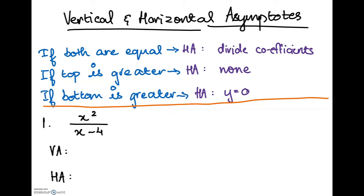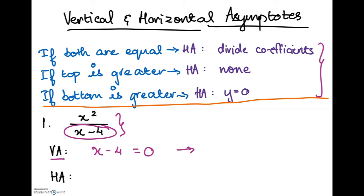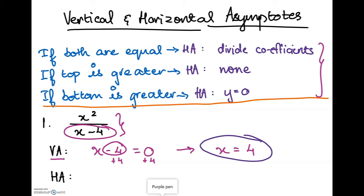Our first example is x squared over x minus 4. To find the vertical asymptote, set the denominator equal to 0: x minus 4 equals 0, then add 4 to both sides to get x equals 4. So x equals positive 4 is your vertical asymptote. For the horizontal asymptote: the highest power of x on top is 2, and on the bottom it's 1. Since the top is greater, there is no horizontal asymptote — write none.